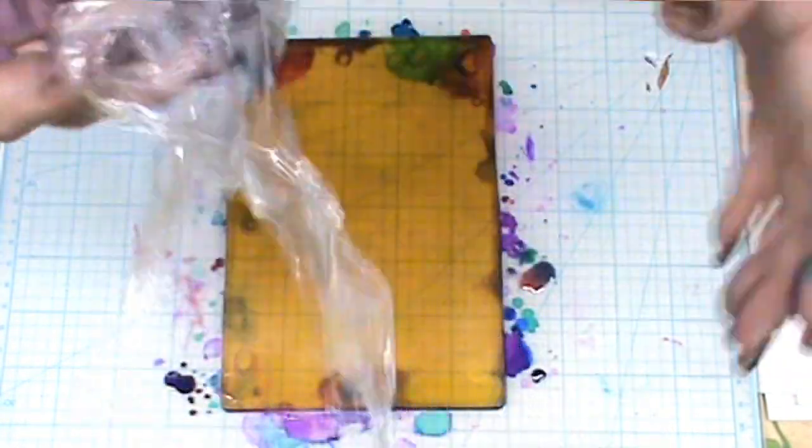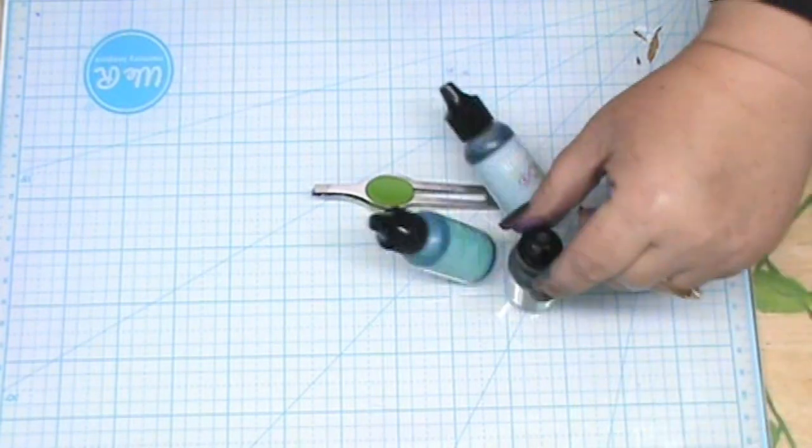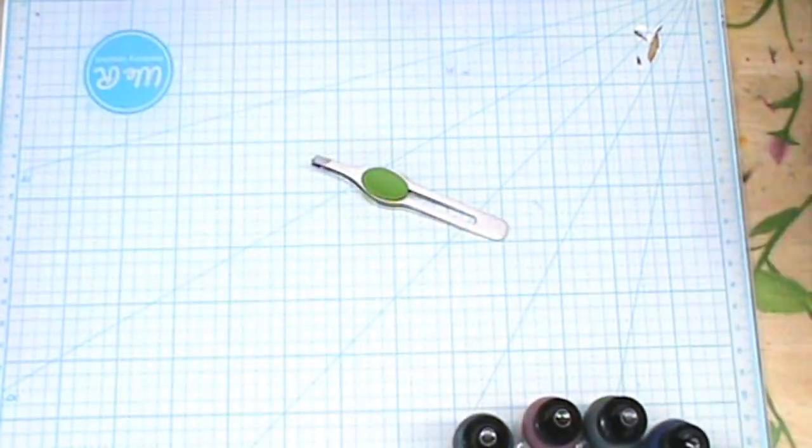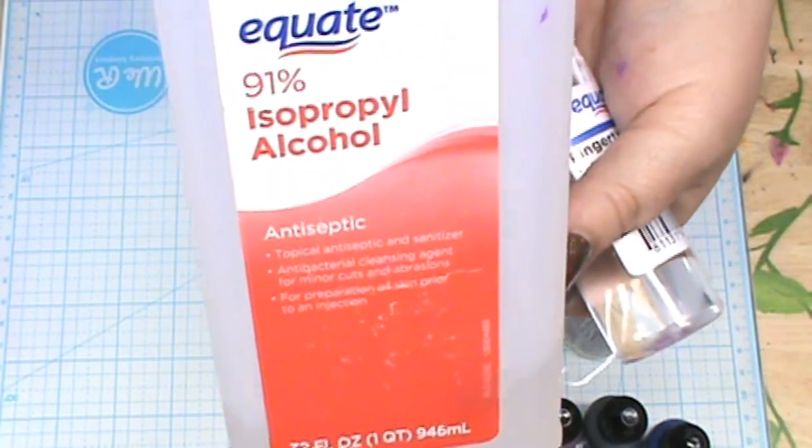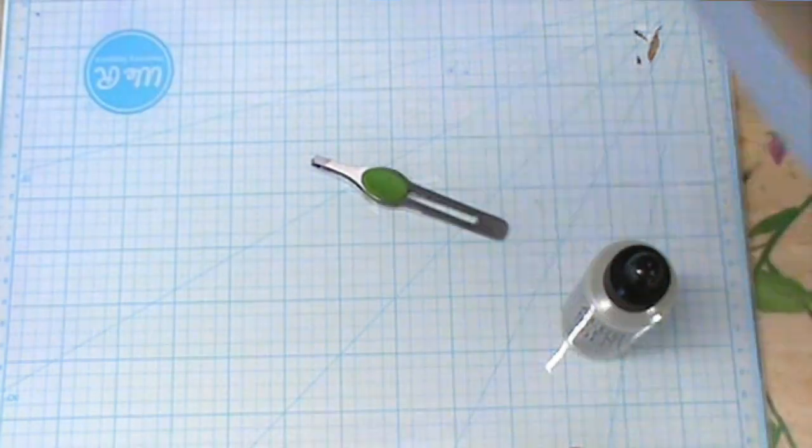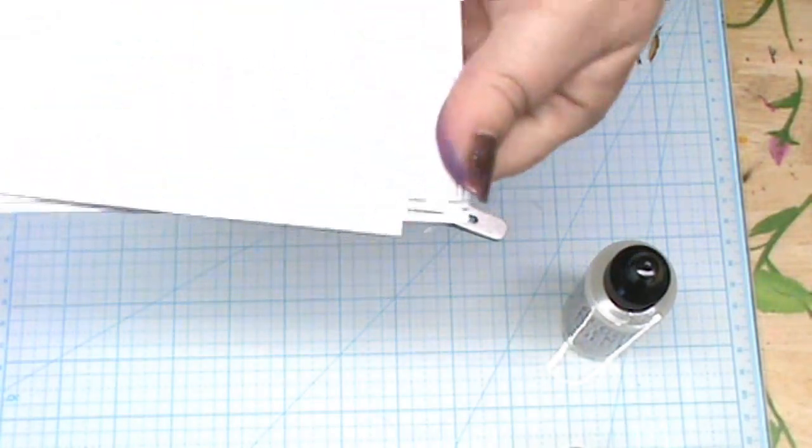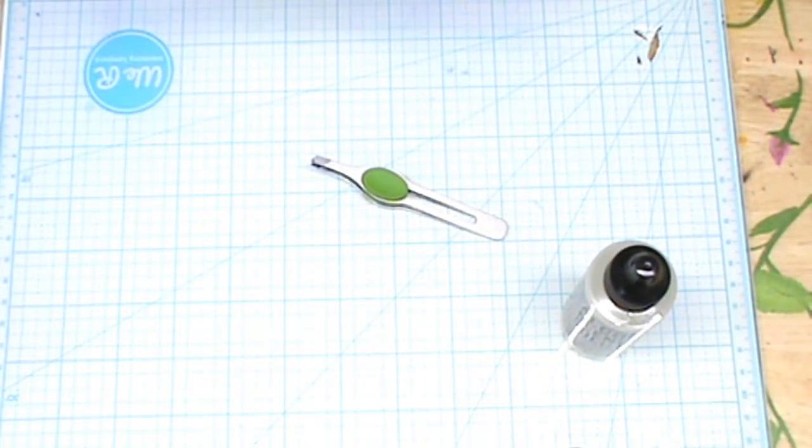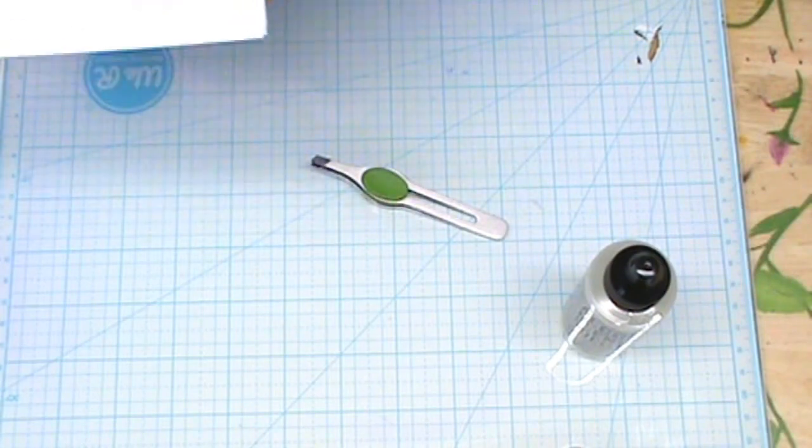Then to clean my gel press off, I just use an alcohol wipe or wipe it down with some alcohol spray. Now we're going to jump into the alcohol inks on Yupo paper, I think I pronounced that right. Need alcohol blending solution, alcohol spray 91%, you're going to want a pair of tweezers or maybe a needle tool. Some paper towels. I did find a needle tool works best later on.